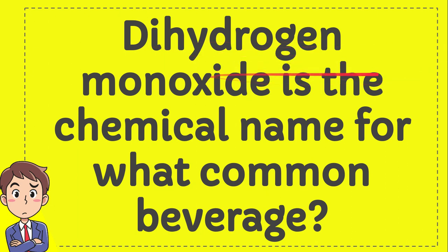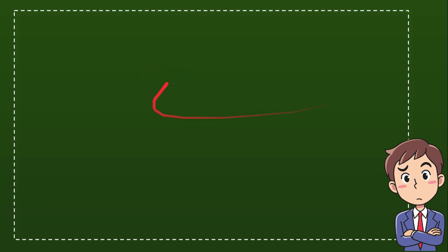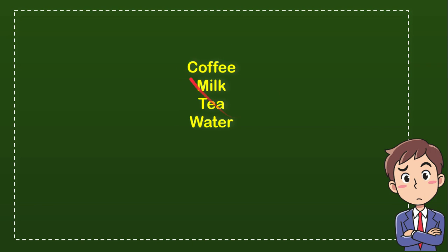Hydrogen monoxide is the chemical name for what common beverage? I'll give you four options — try to guess which one is correct. The first option is coffee, the second option is milk, the third option is tea, and the last option is water.